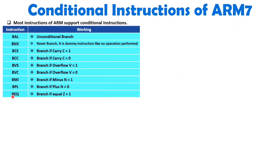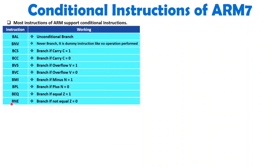BEQ means branch if equal. With previous data, as if you have a comparison or similar operation and the Z flag equals 1, then branch if equal — there will be a branch. BNE means branch if not equal. As if the Z flag is 0, branch will happen to the specified location written after the BNE instruction. You always write a label, and that label holds the address to which you want to jump. So as if Z is 0, branch will happen with BNE.